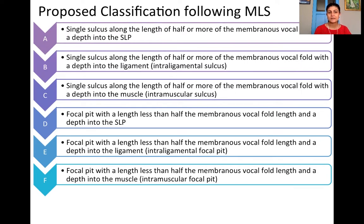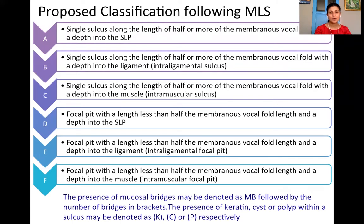When the depth is into the SLP it is type D, into the ligament it is type E, and into the muscle it is type F. When there is a polyp, cyst, or keratin within the sulcus, it can be denoted as KCP in brackets. When there are associated mucosal bridges, that can be mentioned as MB.